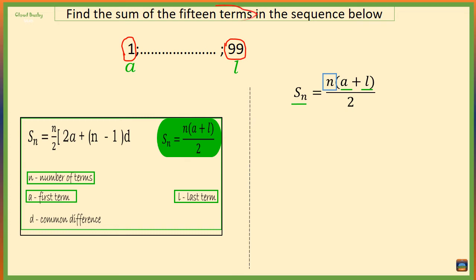We have 15 terms in the sequence, that means n is 15. Now we can write here sum of 15 terms is equal to half of 15 times 1 plus 99.